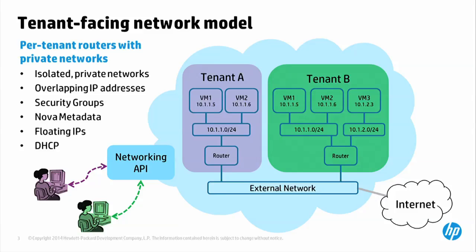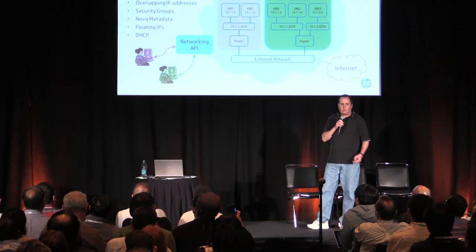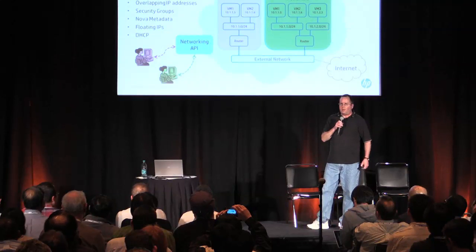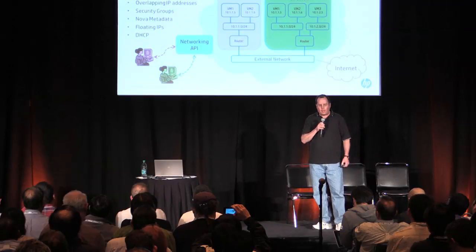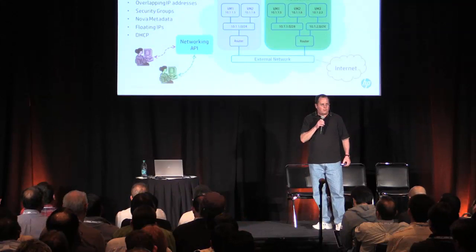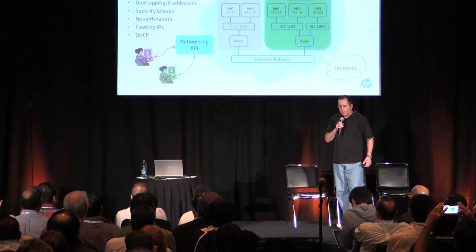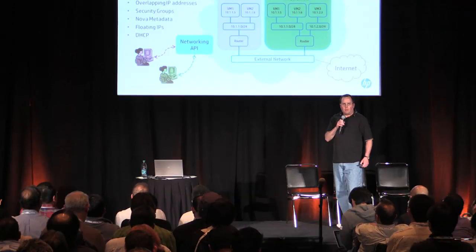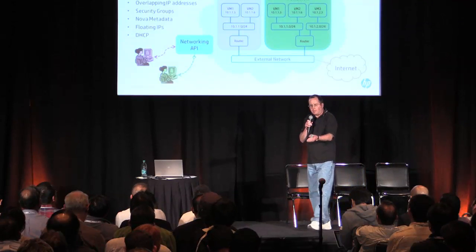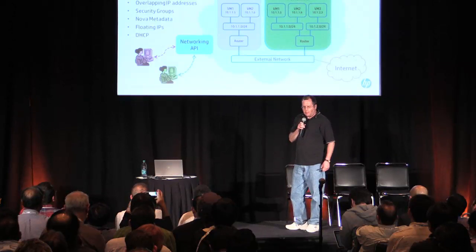A little background on our model. The tenant-facing network model we run is per-tenant routers with private networks. This was really the only model that gave us all the features we needed: isolated private networks, overlapping IPs. We also inherited functional requirements from our Nova stand-up around security groups, Nova metadata, floating IPs, and DHCP. So if you come on our public cloud as a tenant, you'll get your own router, your own networks, your own subnets.